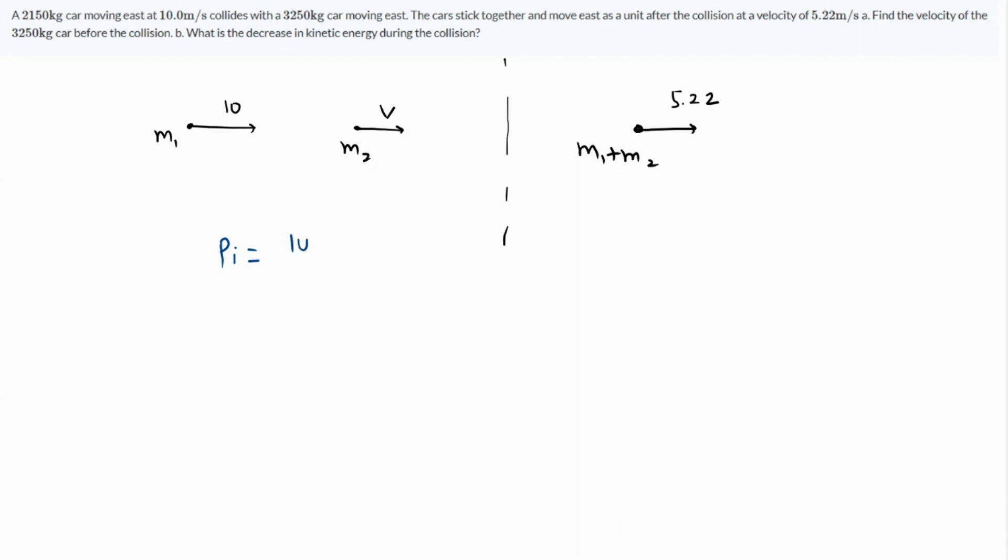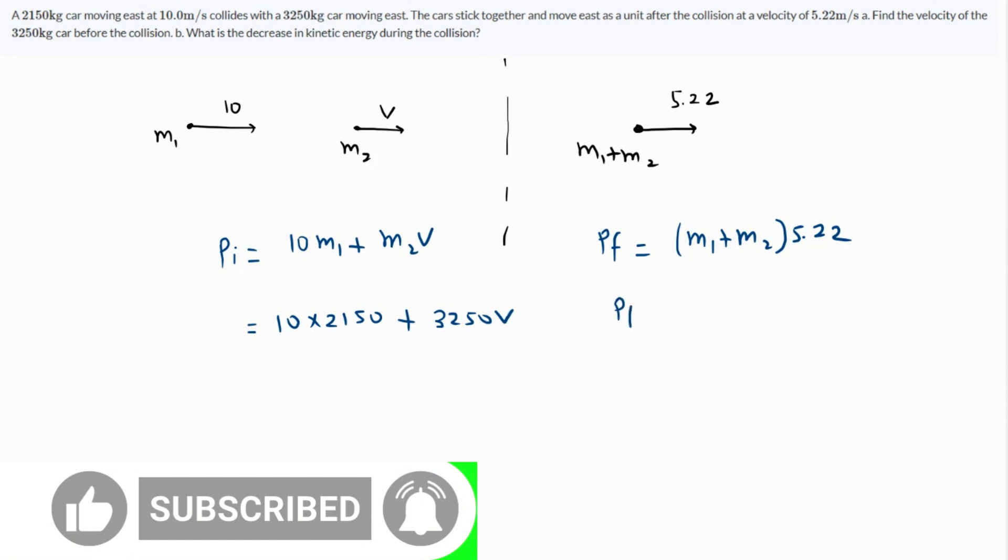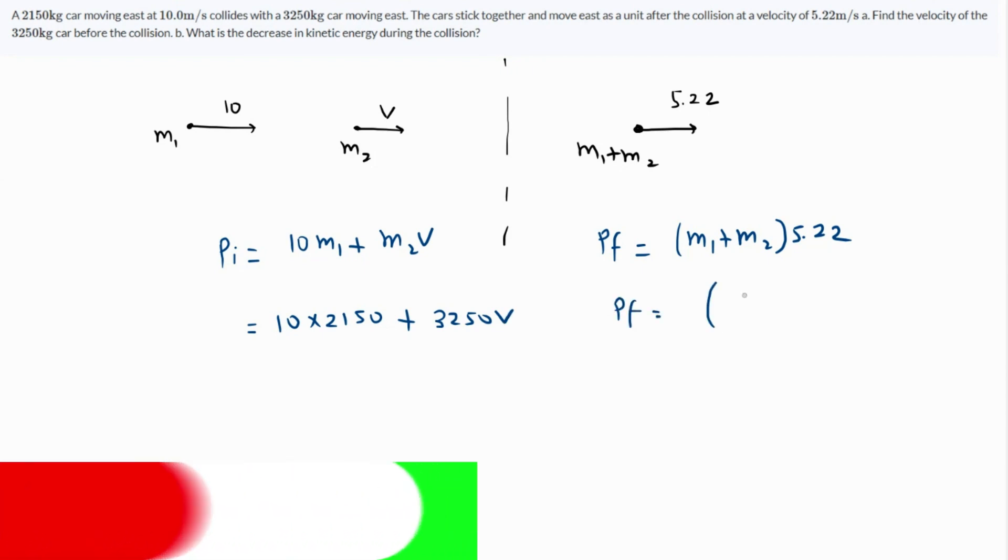And the final momentum is going to be (m1 plus m2) times 5.22. Let's substitute the values: m1 is 2150 and m2 is 3250, and final will be m1 plus m2.